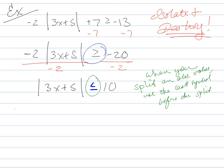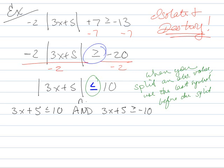Now we'll split it. When you split an absolute value, use the last symbol before the split — so we're going to use the less than or equal to sign, even though it started as a greater than or equal to. Right before we split it, it was a less than or equal to, so that's the one we go with. Since it's a less than sign — short people like me, picky — that means 'and,' the intersection.